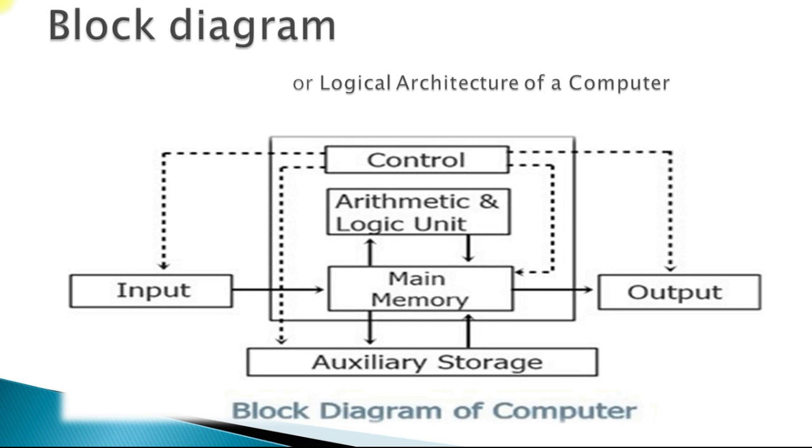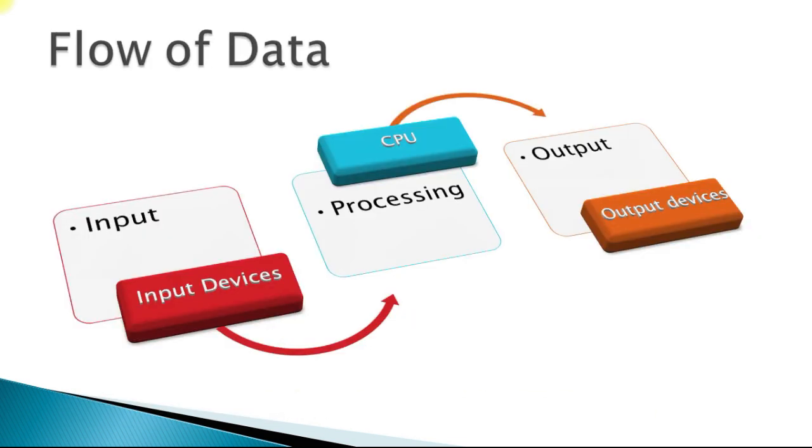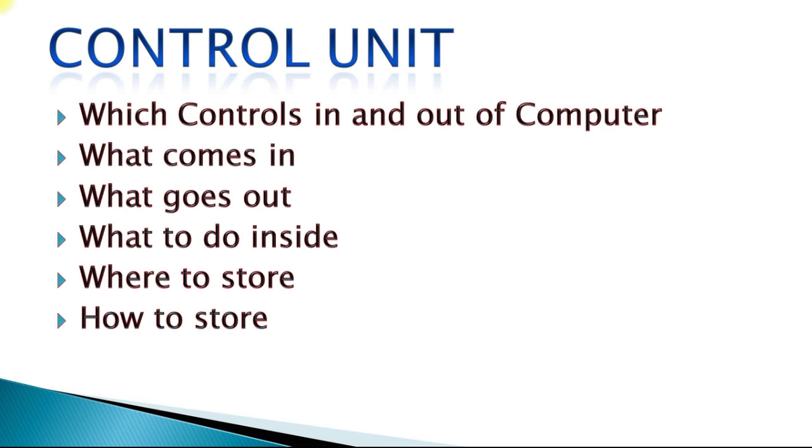Input means what we give to the computer is called input. Output means what computer gives us is called output. Then what performed by the computer is called processing. This flowchart can be represented like input processing output. Input will be given by input devices. Processing will be performed by CPU, central processing unit. Output will be generated on output devices. There is a flow of data in the computers. So, let us discuss each and every unit in detail.